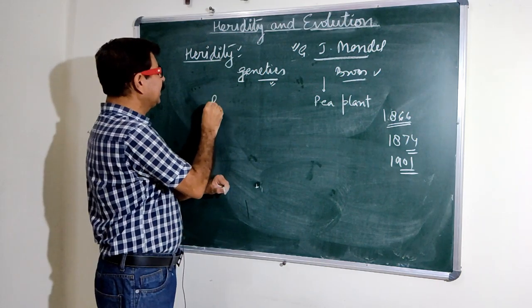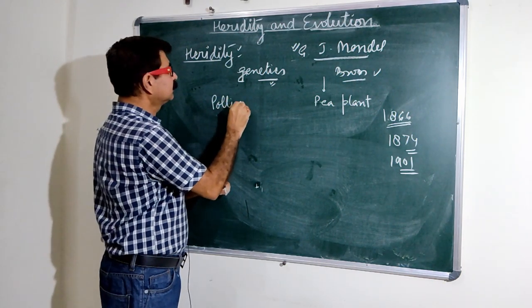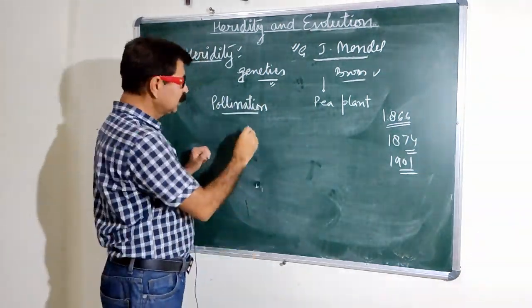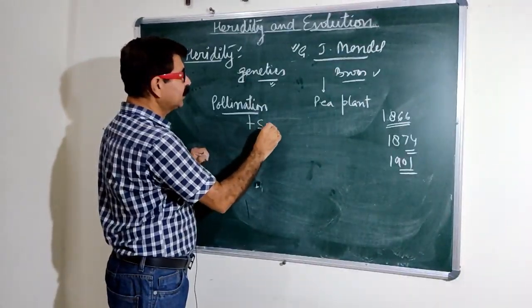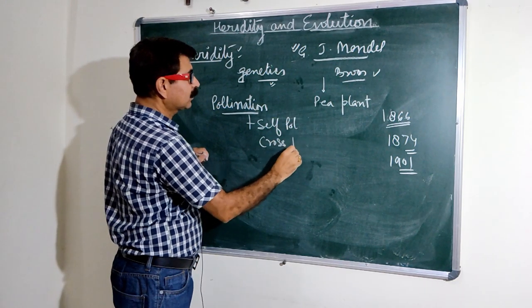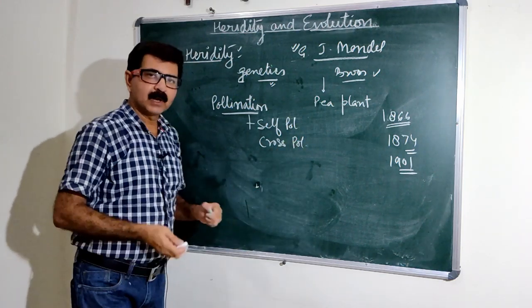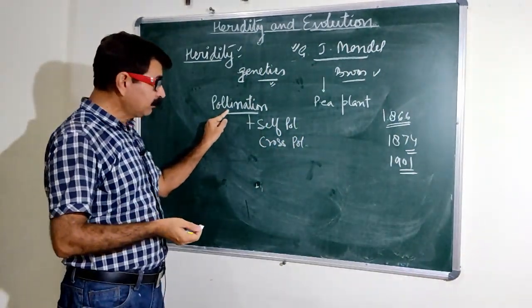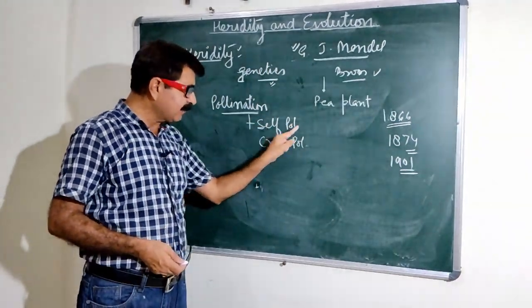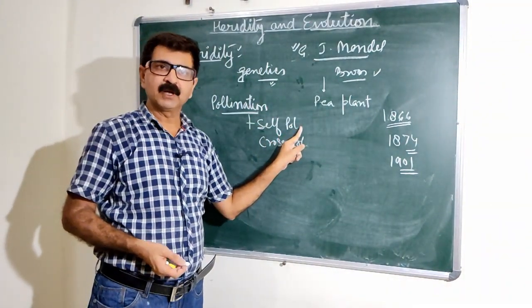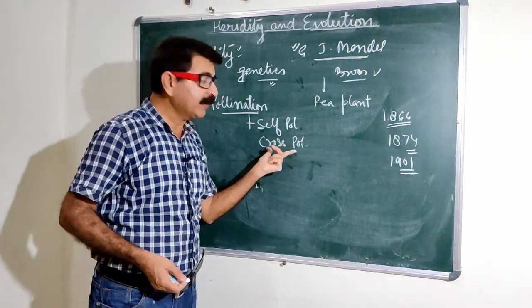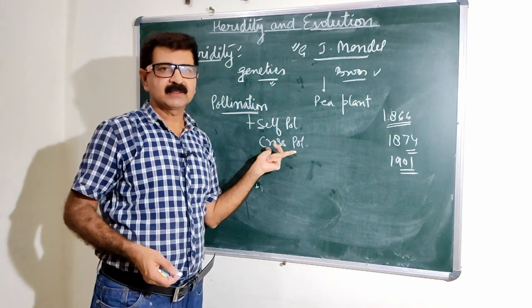Before knowing his theory, there are a few terminologies we should be aware of. First is pollination, which we read in the previous chapter. Pollination is the transfer of pollen grains from anther to stigma. If this process takes place in the same flower, it is self-pollination. If it takes place between two different flowers of the same species, it is cross-pollination.